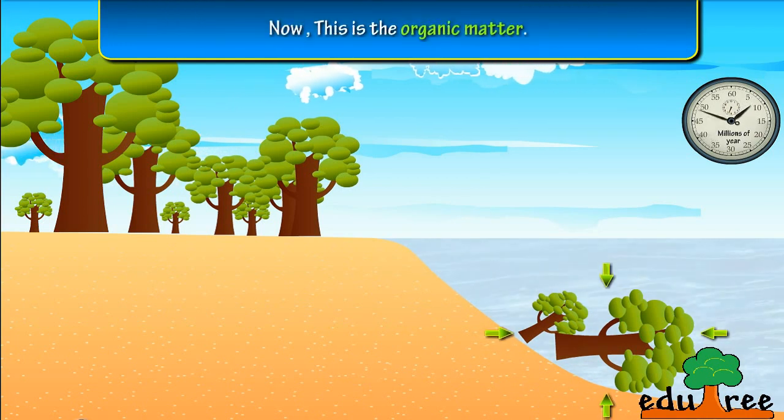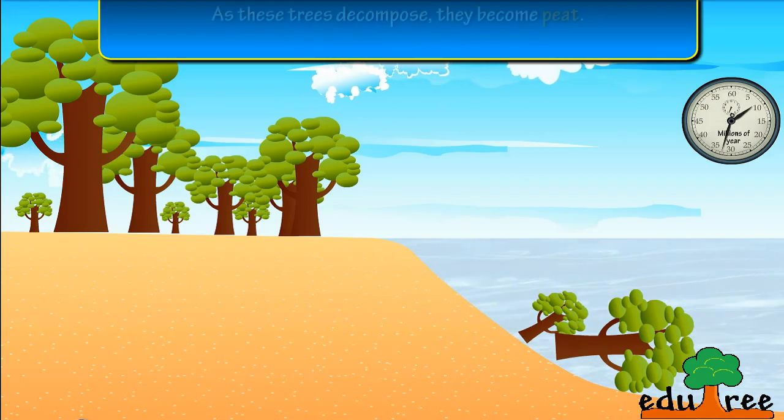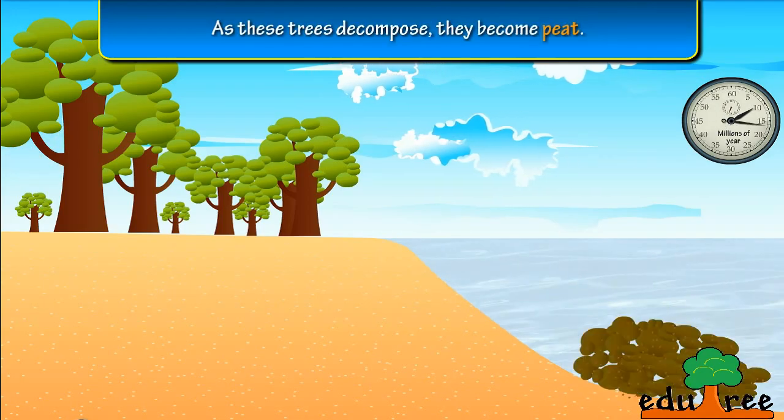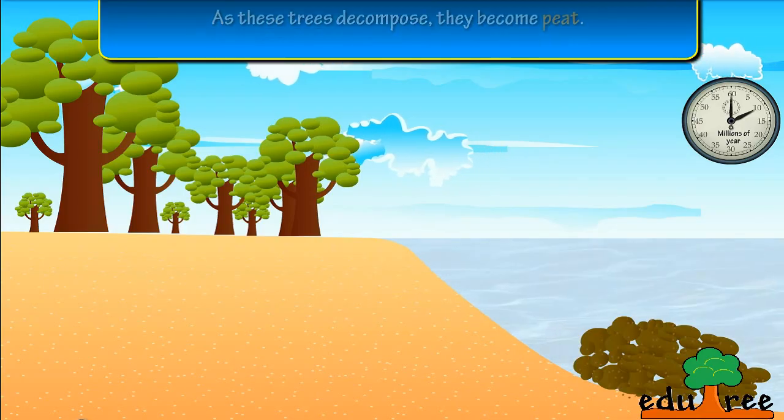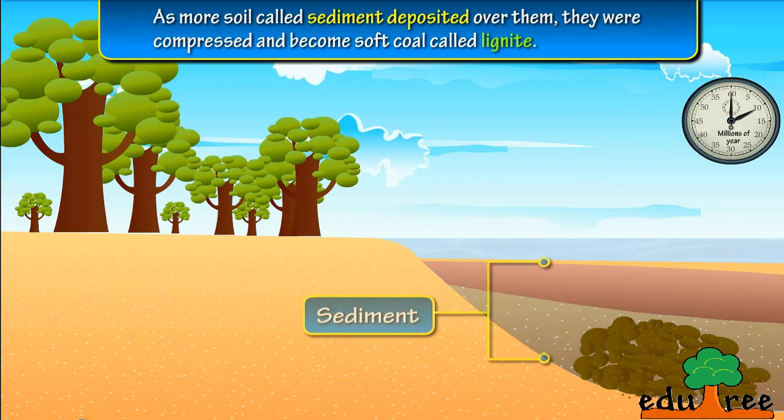As these trees decompose, they become peat. As more soil called sediment deposited over them, they were compressed.